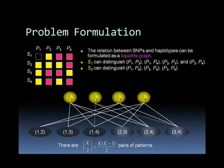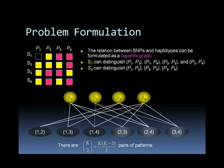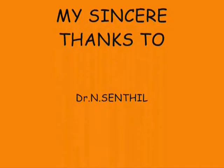There are K×(K−1)/2 pairs of patterns. Therefore, microarrays can be used to detect differences in the levels of gene expression in different populations of cells on a genome-wide level.